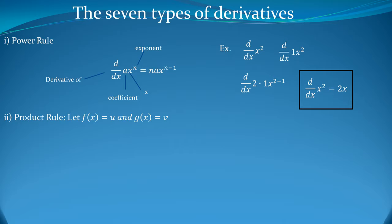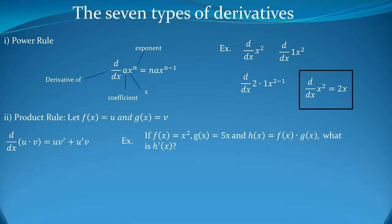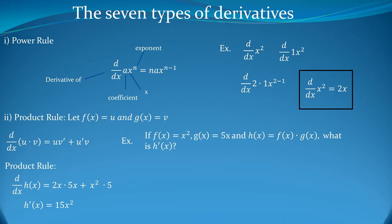Now for the product rule. Let f(x) equal u and g(x) equal v. The product rule states that the derivative of u·v equals u·v′ + u′·v. For example, if f(x) = x², g(x) = 5x, and h(x) = f(x)·g(x), what is h′(x)? Plugging in using the product rule, h′(x) = 2x·5x + x²·5, using the power rule in each case, which simplifies to h′(x) = 15x².